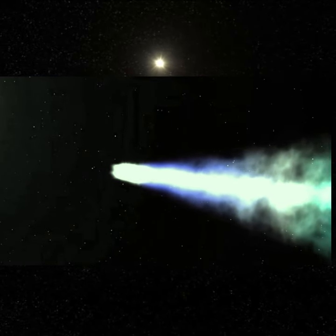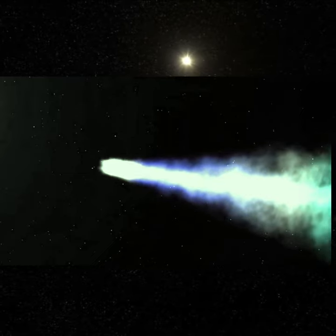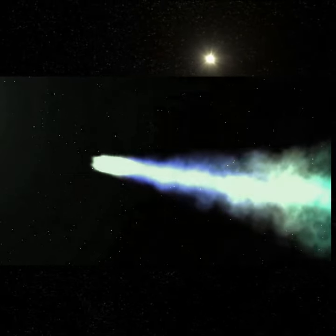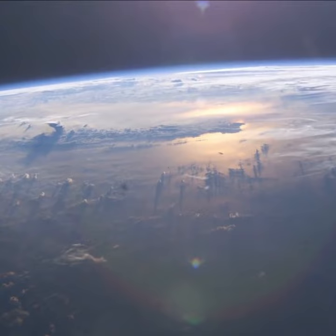A bright green comet is set to swing by Earth's outer space and may hang around for a month. It will become visible all night long from the northern hemisphere.